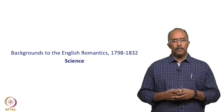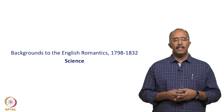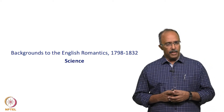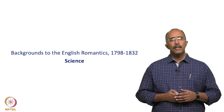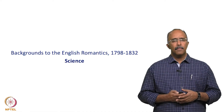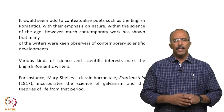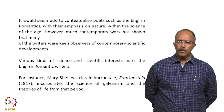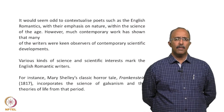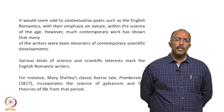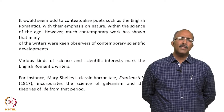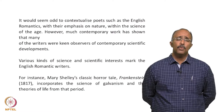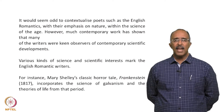Hello everybody, welcome to the end of the first week and the fifth lesson here as part of the context for the study of the English Romantic 1798 to 1832. Today we will be looking at the context of science. Some of you will possibly react and say it is odd to contextualize English Romantic writers with their emphasis on nature, imagination and children within the science of the age. However, much contemporary work has shown that many of these writers were keen observers of contemporary scientific developments and had an acute and active interest in the science of the period.